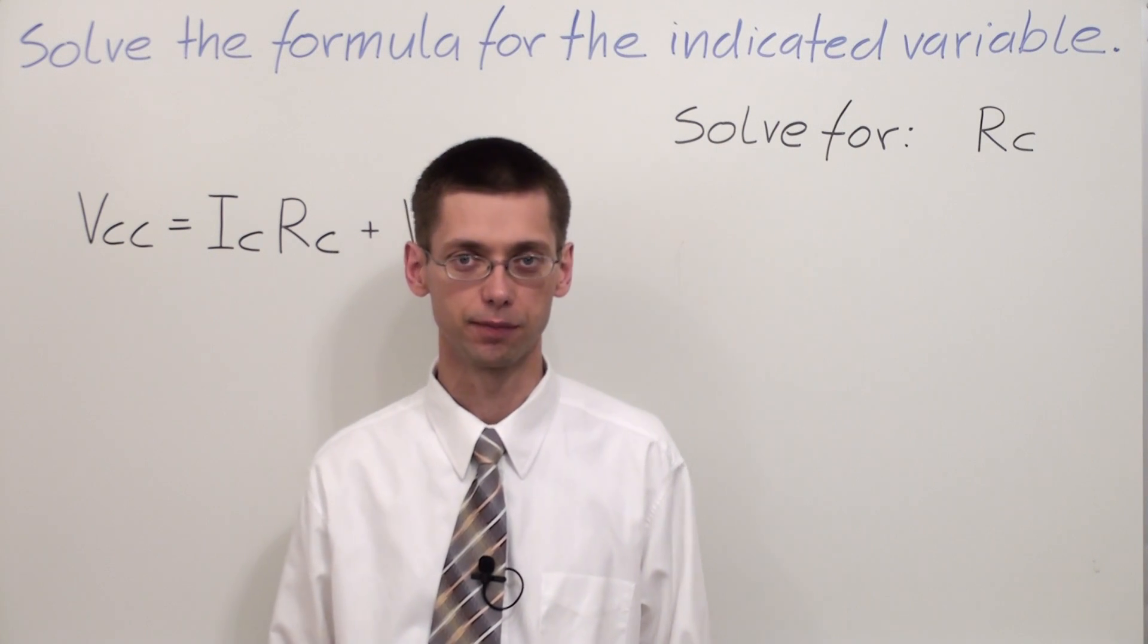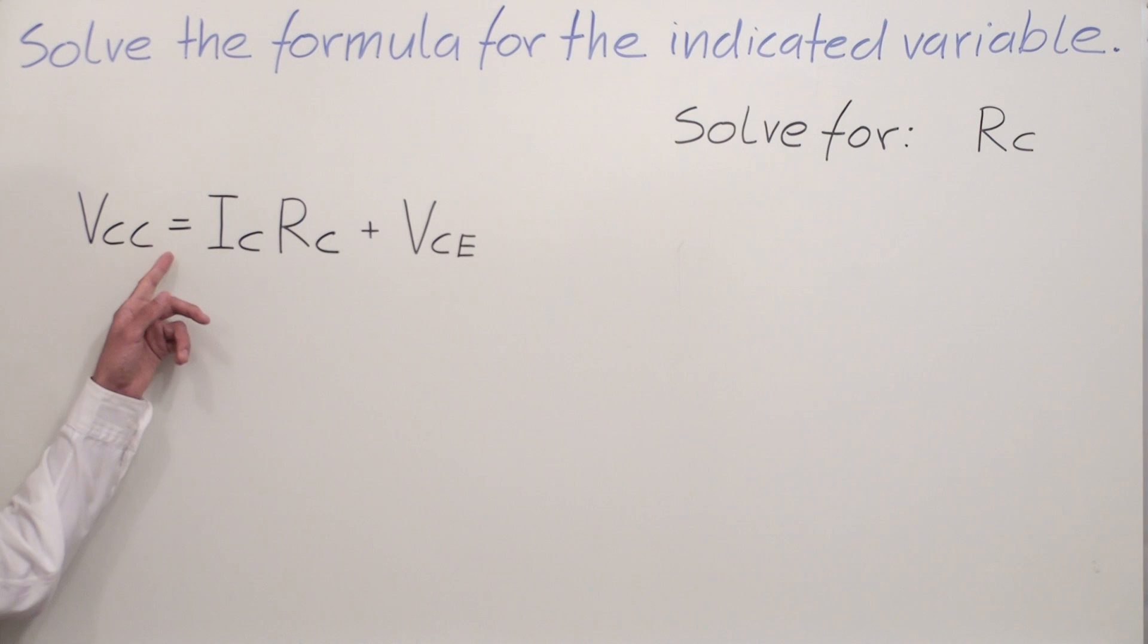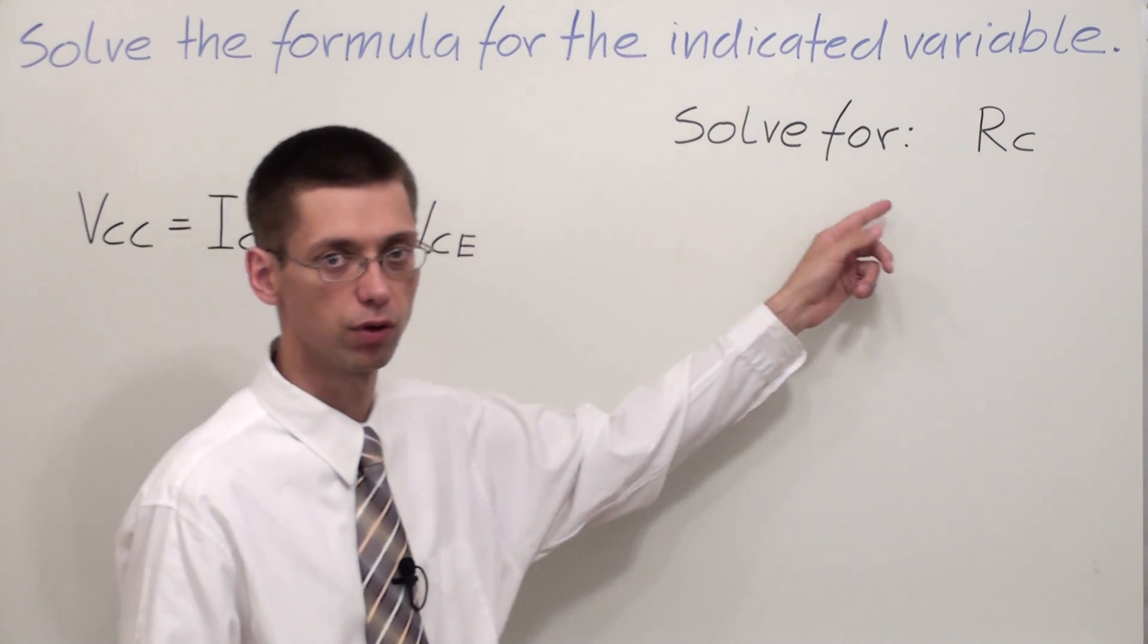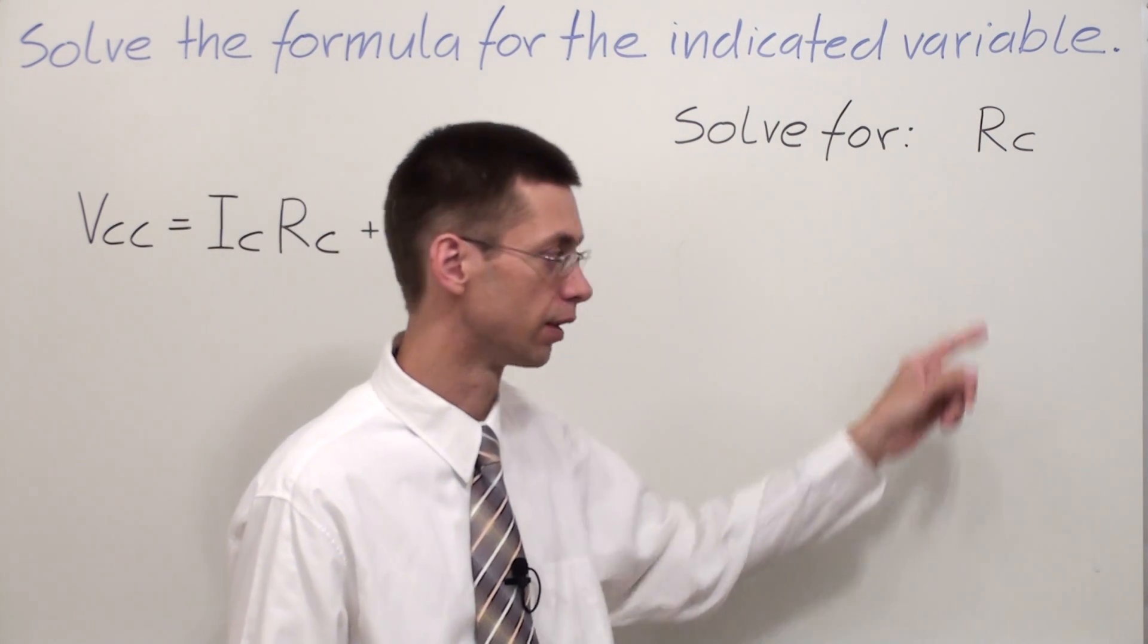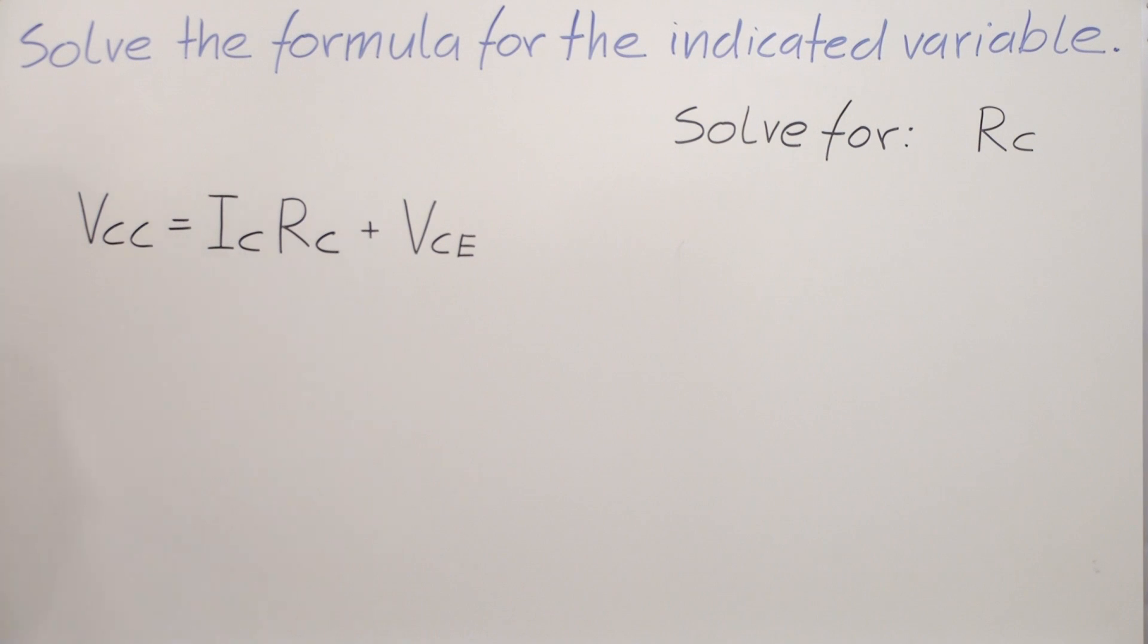We have another example. This time we have a formula which says VCC equals IC times RC plus VCE, and we are looking for RC. First, we have to check where is our RC. RC is on the right side of my formula, multiplied to IC, and the whole term is added to VCE.